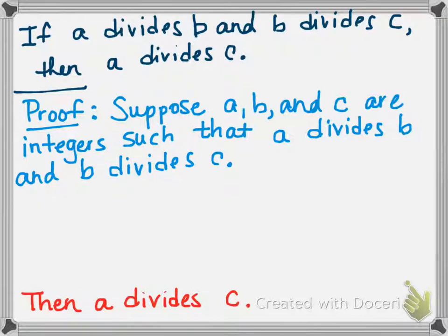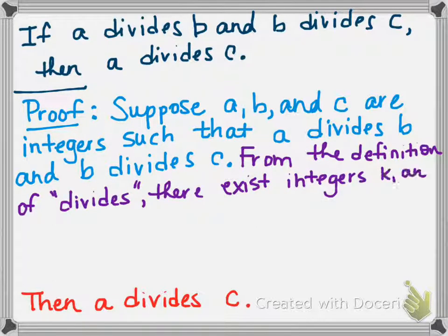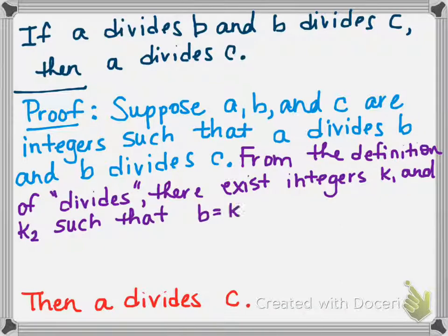Remember what our end goal is. So most of the time, after you have an assumption, you're going to start talking about why that assumption is true. So we're going to start by using the definition of divides. So from that definition of divides, there exist integers K1 and K2 such that B equals K1 times A, and C equals K2 times B. Those are the definitions that A divides B and B divides C. Notice I'm even telling you where that statement comes from. I'm leaving no room for ambiguity.